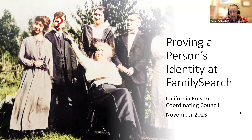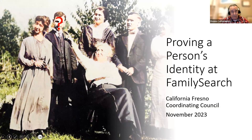We'd like to welcome you out this evening. We're going to talk a little bit about proving a person's identity on FamilySearch. I'm sure none of you have ever run across situations where there's been people that were misidentified. We're going to talk about how to avoid that situation, because we all run into it in our own research, and your patrons are going to run into it.